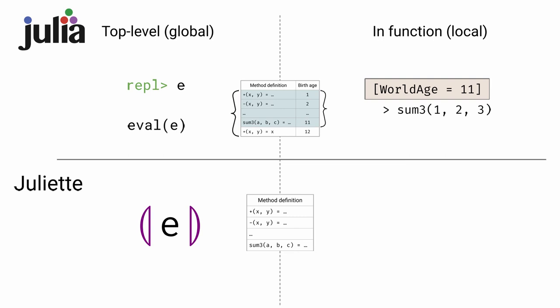Evaluation within a function is represented by a local evaluation construct. The local table captures the state of the global table at some point in the execution, and it never changes afterwards. Once created, local tables are immutable and independent of the method definitions that might be added later to the global table. Function calls within the local evaluation construct may only dispatch to the local table.